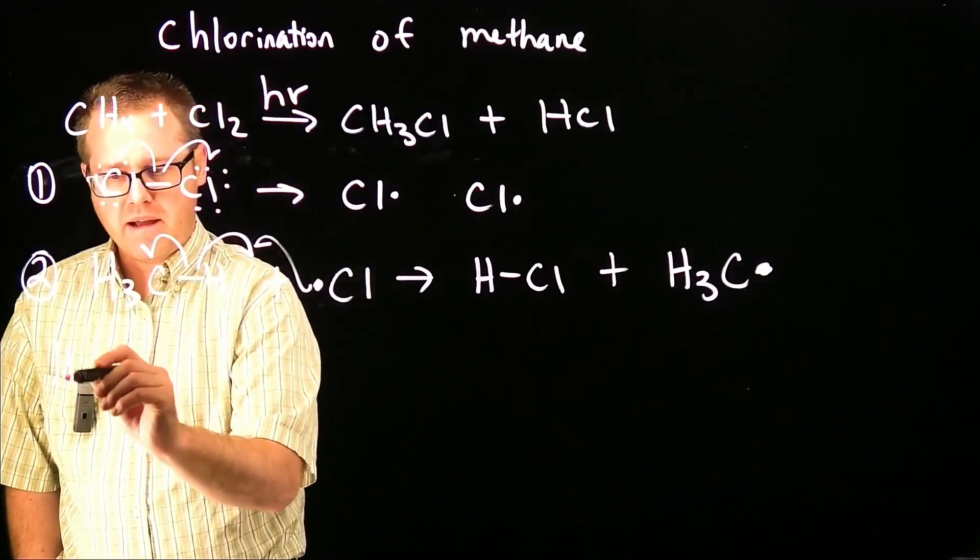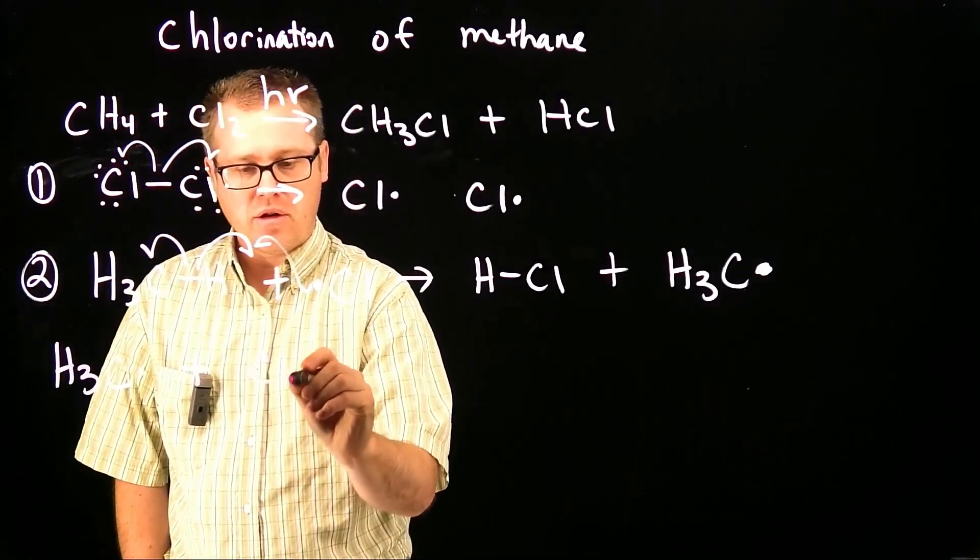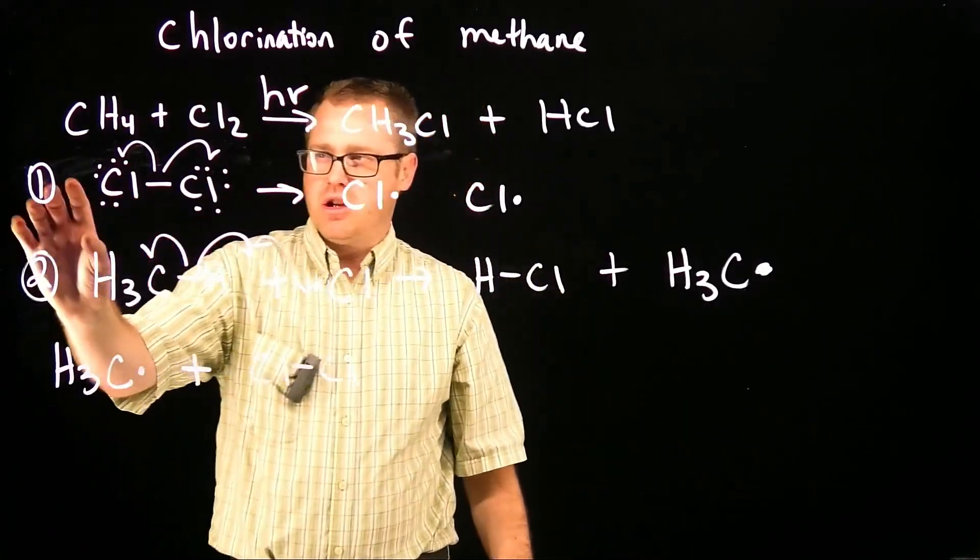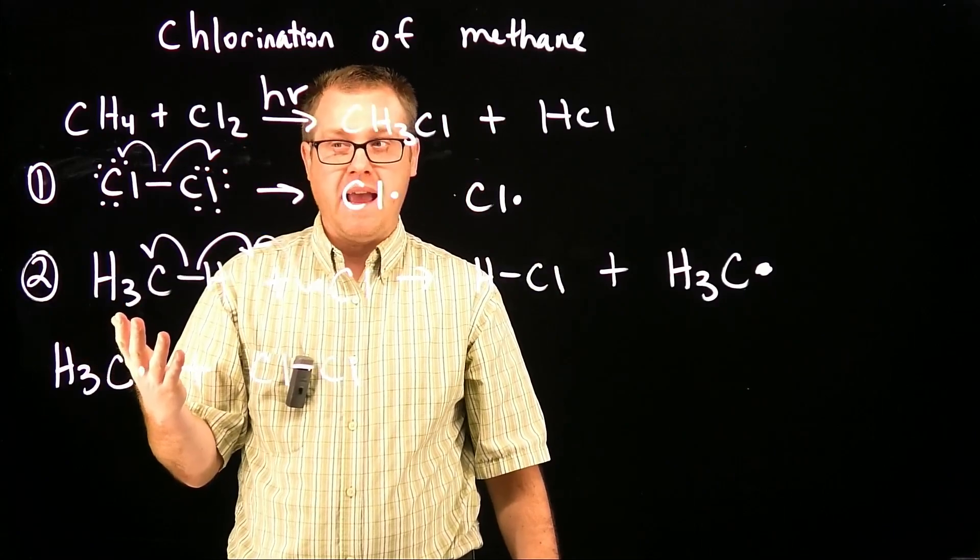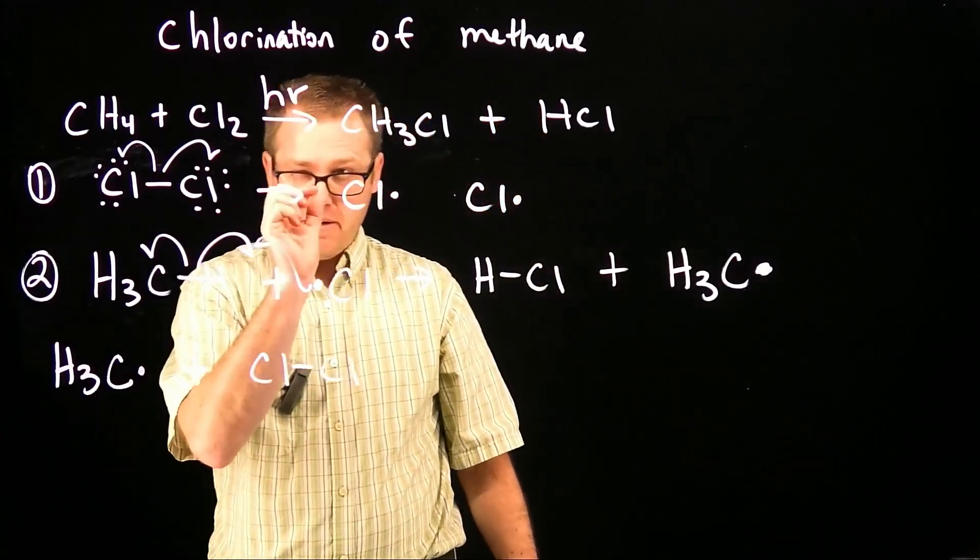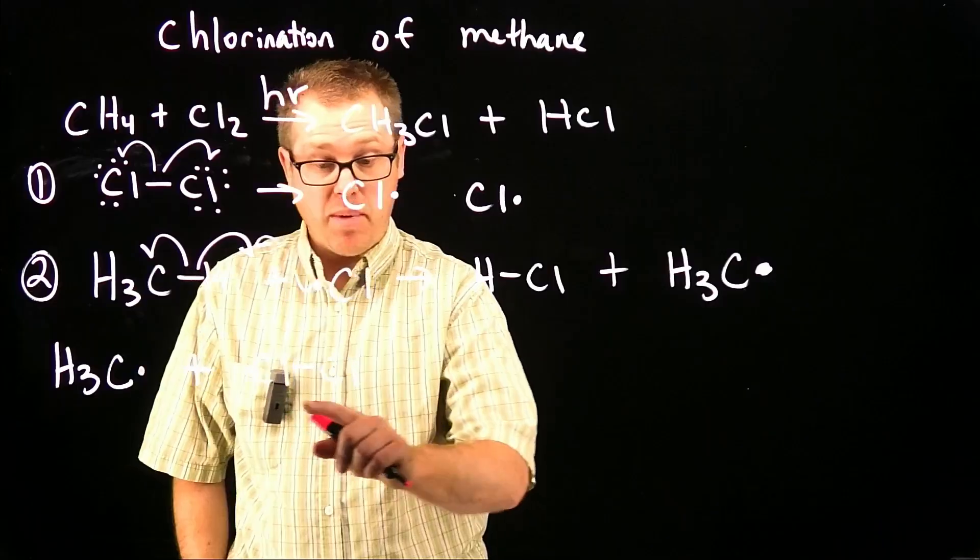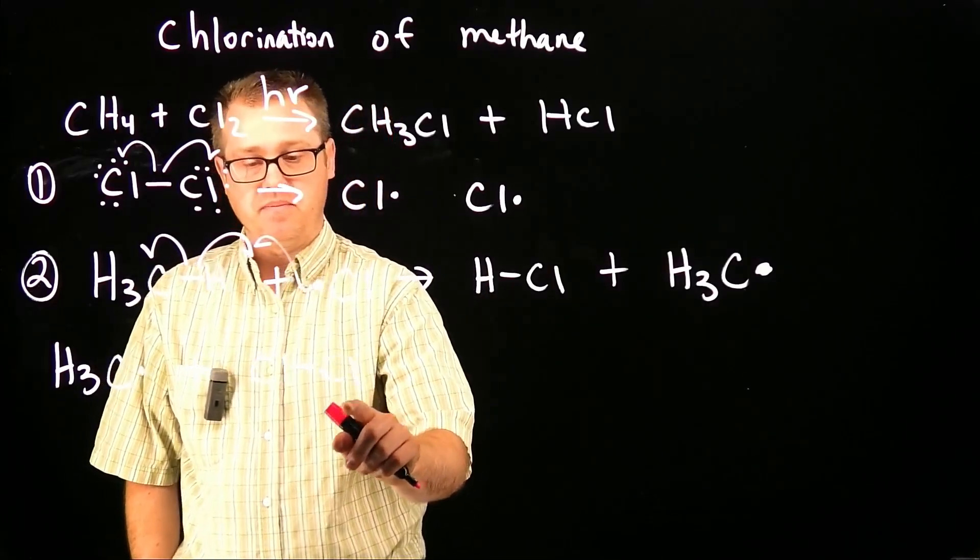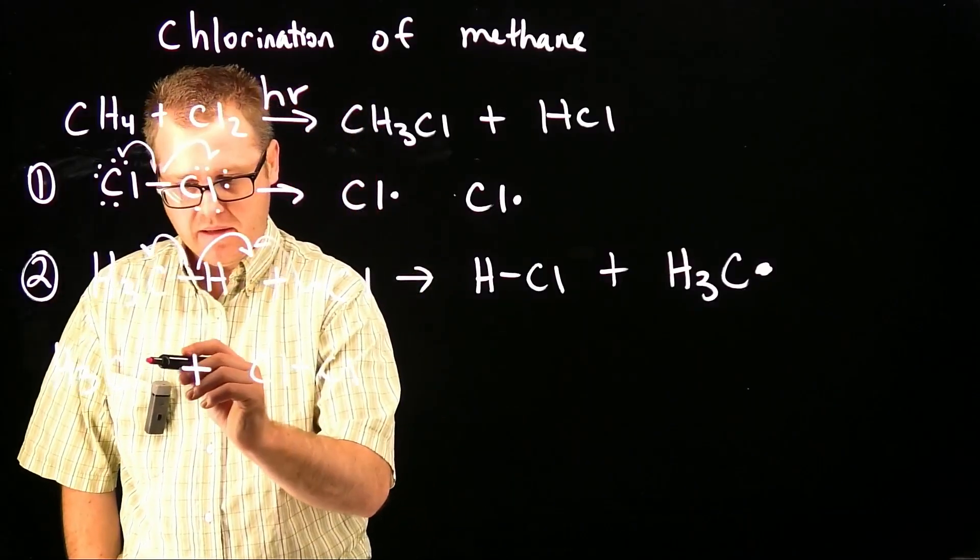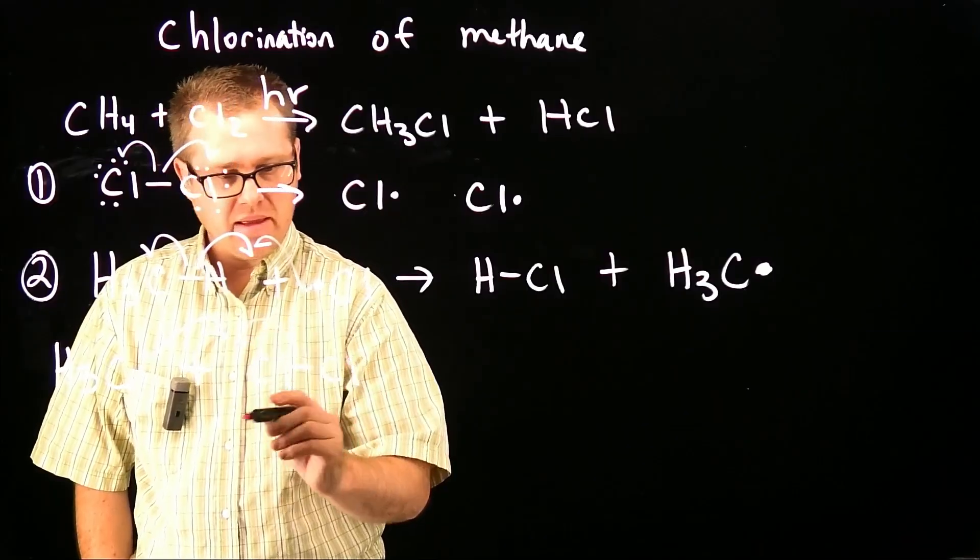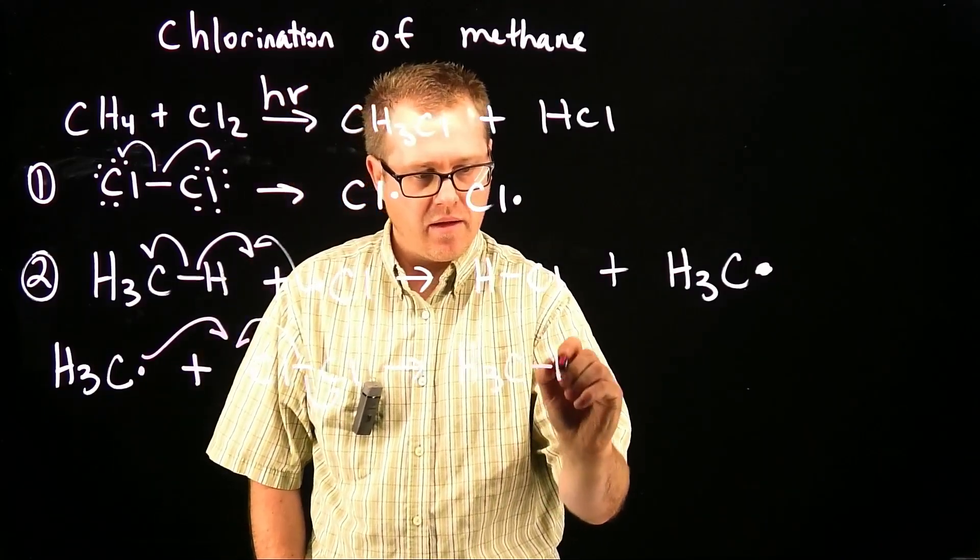Now I can take that carbon radical and do an abstraction. I can take my carbon radical and treat it with another chlorine molecule. When we do the initiation step, the light does not convert all the chlorine in the reaction into radicals. It converts a very small fraction of the chlorine into the chlorine radicals. So we still have an abundance of chlorine present. What's going to happen now is we are going to do that halogen abstraction step. What do we get? We now have made our product.